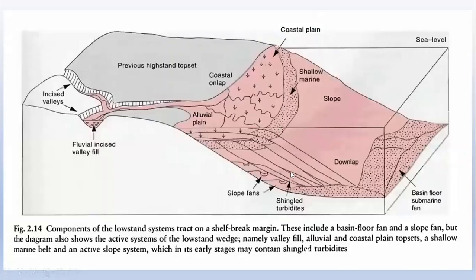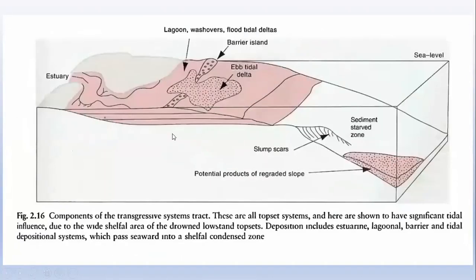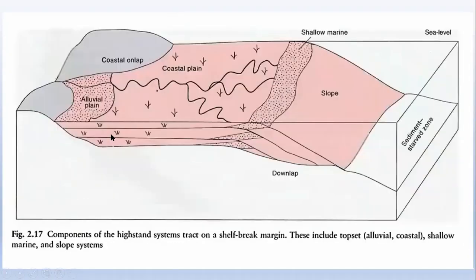In this diagram, the lowstand system track develops during sea level fall and develops towards the basin. It is followed by the transgressive system track, which develops during the transgressive stage of the sea level cycle due to a facies shift towards the land, and is restricted to the shelf region. The transgressive system track is then followed by the highstand system track, which develops after the transgressive system track in the sea level cycle.